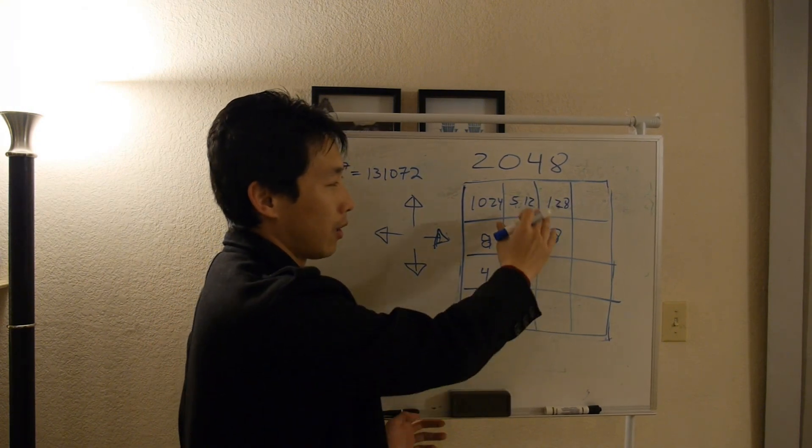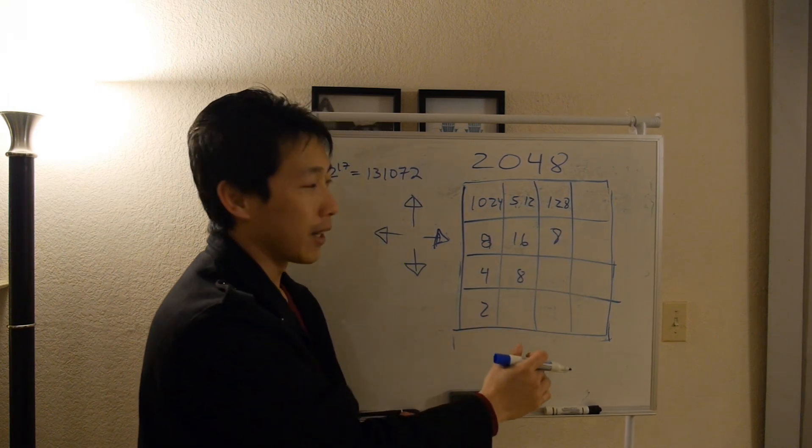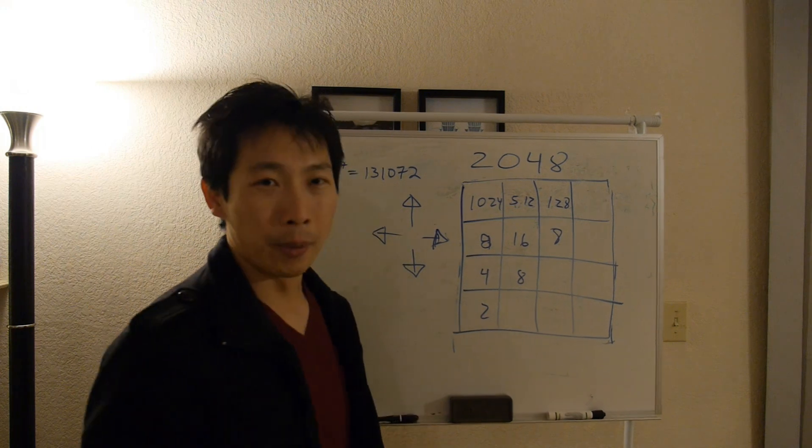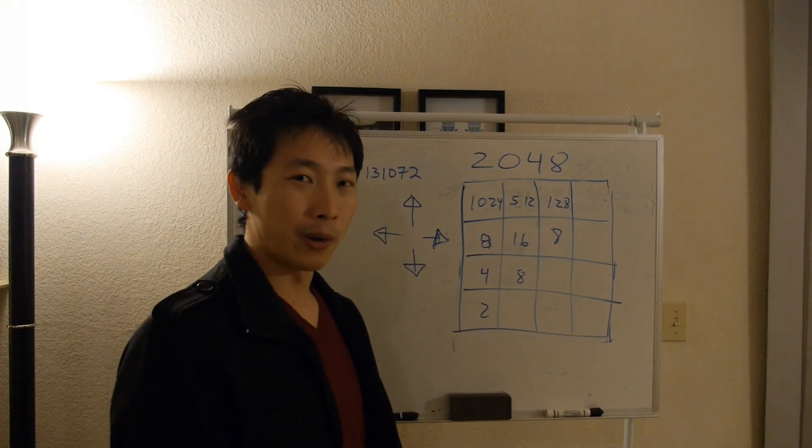And it will look at all the free tile spaces and pick one at random, say here, and it will pick either a 2 or a 4 to appear.